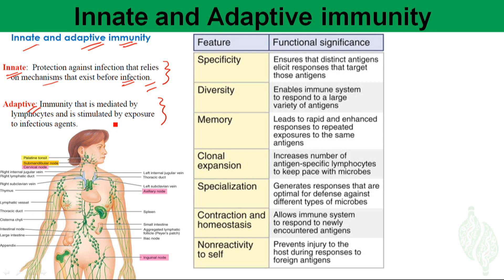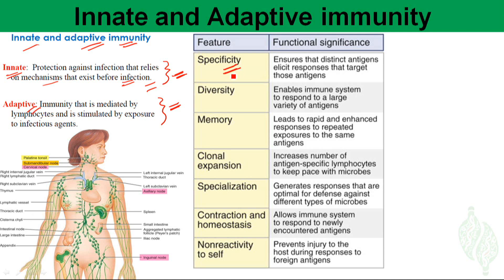There are important differences between innate and adaptive immunity. The innate immune system is the first line of defense and activates very early upon pathogen invasion, whereas the adaptive immune system comes later. The innate immune system is not highly specific to the pathogen, but the adaptive immune system is very specific to the pathogen.